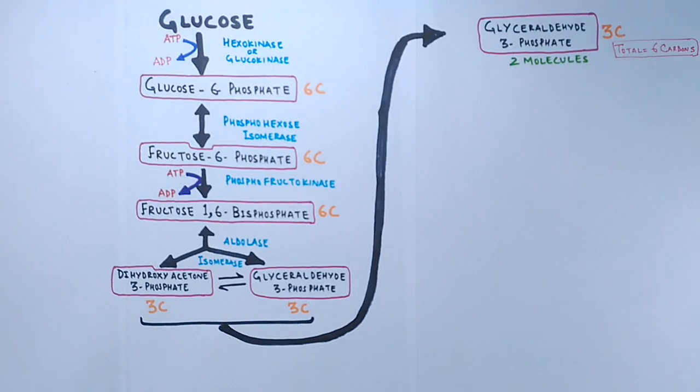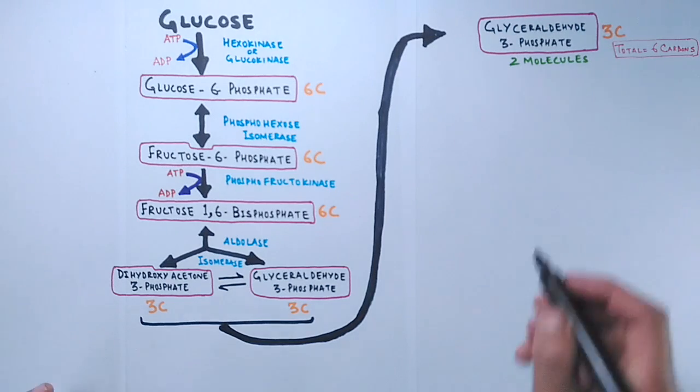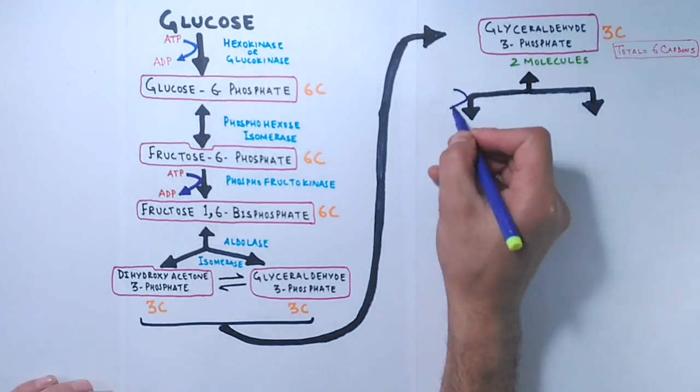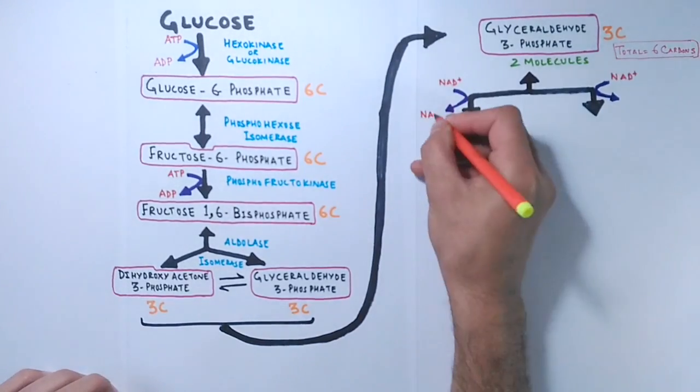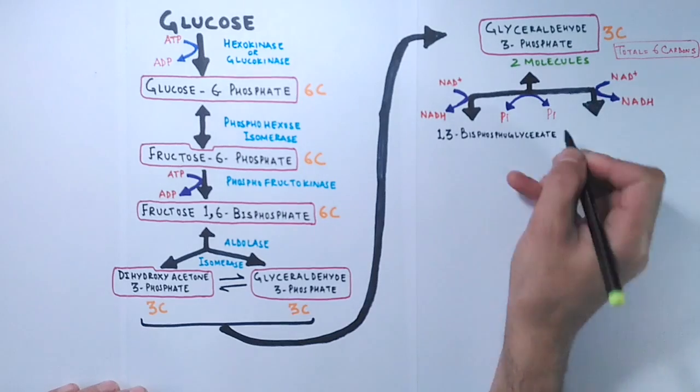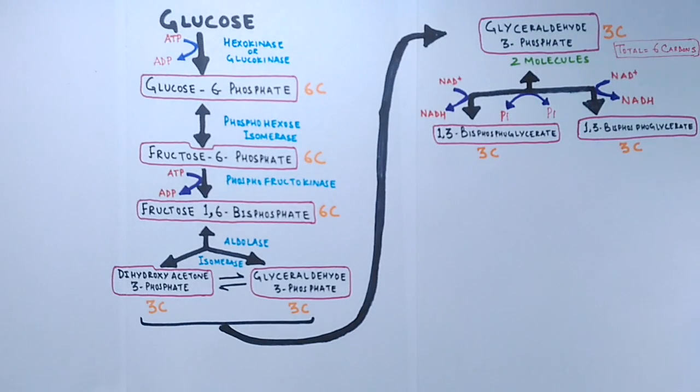Now after that, both molecules of glyceraldehyde 3-phosphate proceed into two sets of reactions that are the same and from here the payoff phase starts. That means we will be getting ATP and NADH produced. The aldehyde group of glyceraldehyde 3-phosphate is oxidized and inorganic phosphate is added to them, forming 1,3-bisphosphoglycerate and also NAD is reduced to NADH in this reaction. Both molecules formed contain three carbons each.